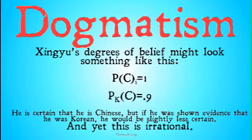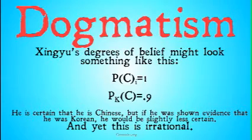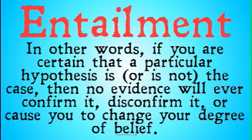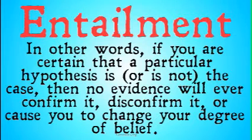The problem is that according to Bayesian epistemology, this is an irrational way to behave. Note that any greater degree of belief he had changed it to — say P(C | K) = 0.2 — would be even more irrational than changing it to 0.9. Remember from entailment: if you are certain that a particular hypothesis is or is not the case, then no evidence will ever confirm it, disconfirm it, or cause you to change your degree of belief. And if you ever do change your degree of belief, you will be inductively irrational according to Bayesian confirmation theory.